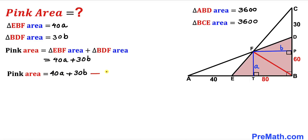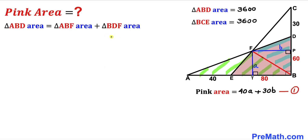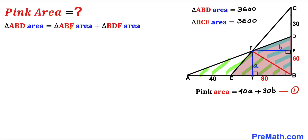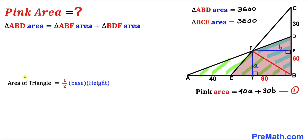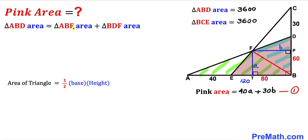Next, let's observe that the area of right triangle ABD equals the area of triangle ABF plus the area of triangle BDF. For triangle ABF, the base is 40 plus 80, making 120, and the height is lowercase a, so its area is one-half times 120 times a, which gives us 60a.